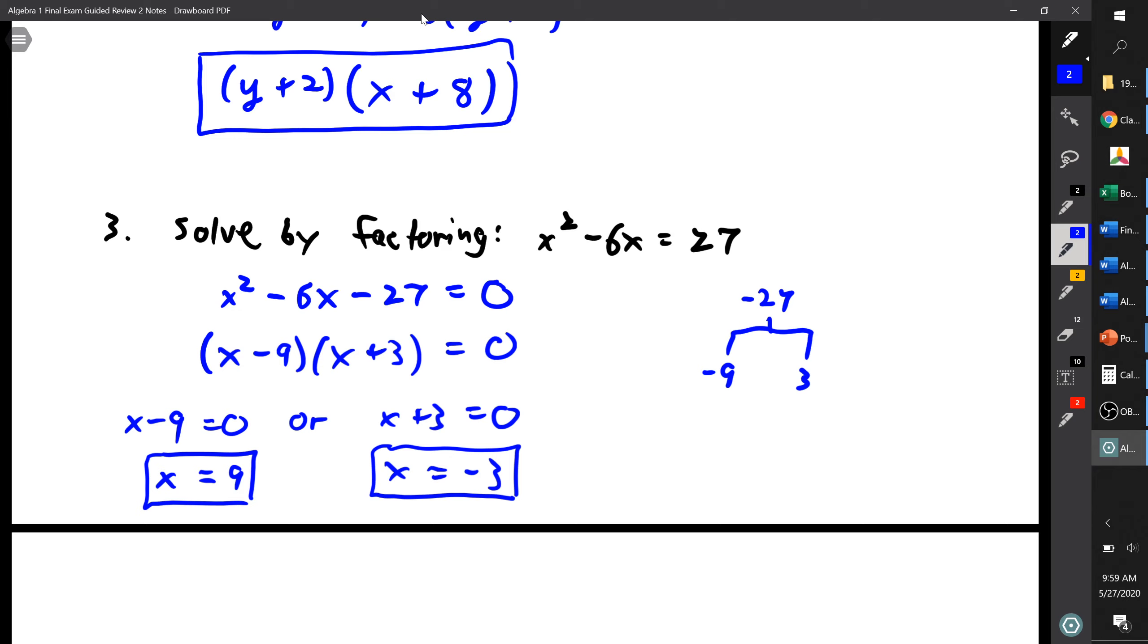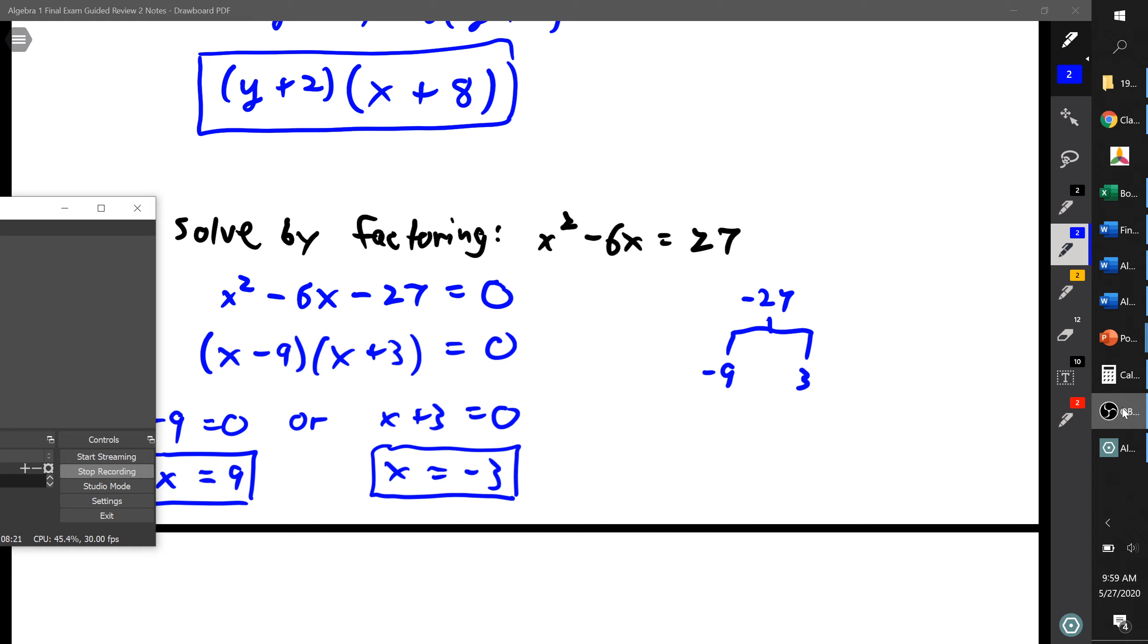And we could go back in and check those, and they would check out with your original problem. Even just a quick glance at our original problem here, using x equals 9: 9 squared is 81, minus 6 times 9, 6 times 9 is 54, 81 minus 54 would give us 27. And the same thing would work out for negative 3. Okay, those are the first three problems, and that'll do it for this video. See you next time.